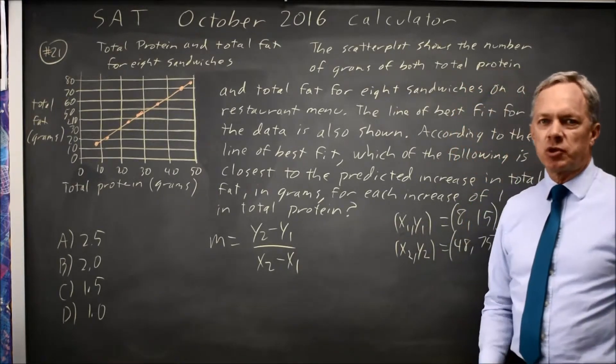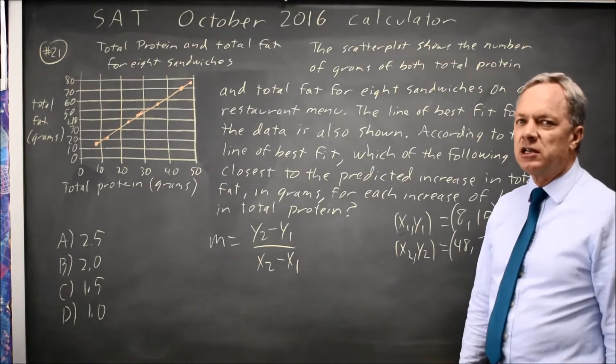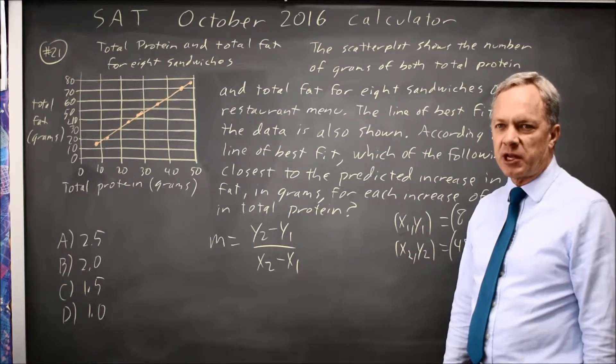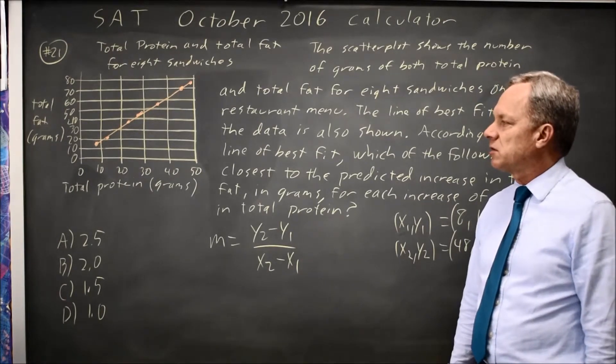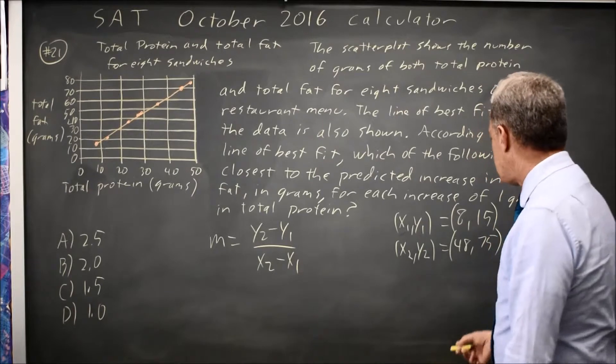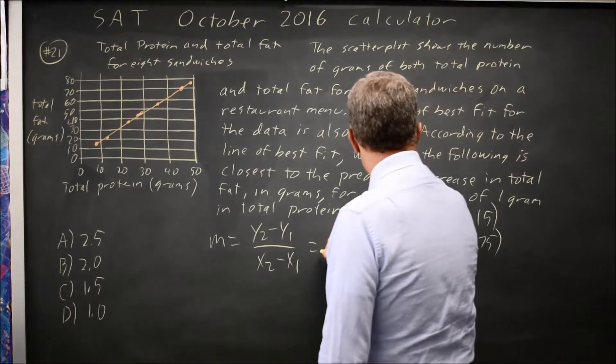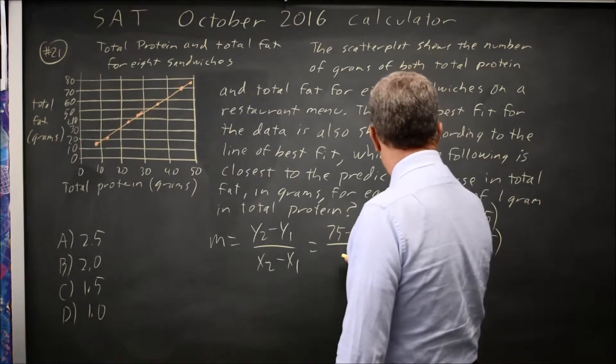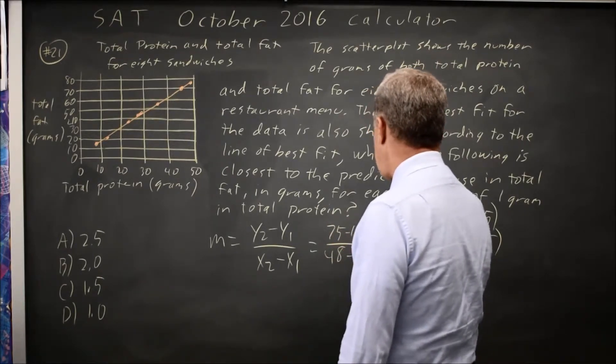And the reason I take distant points is the further apart they are, the less any errors in reading the graph are going to matter, and my errors don't really change depending on where I am on the graph. So my slope is the change in Y is 75 minus 15 over the change in X, 48 minus 8.